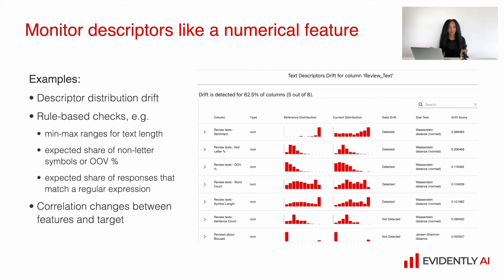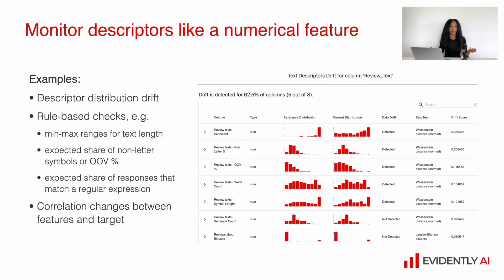Or you can track any statistics which you can calculate on top of tabular data — for example, correlation changes between the features, which are descriptors in our case, and the target. So it's really, really nice.